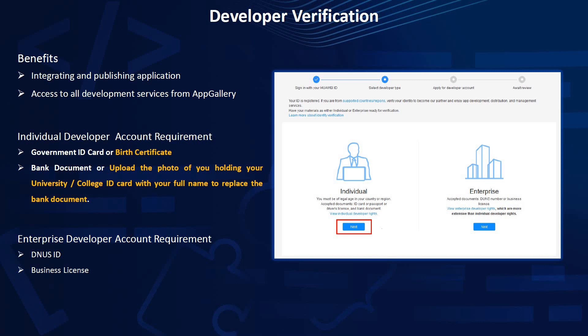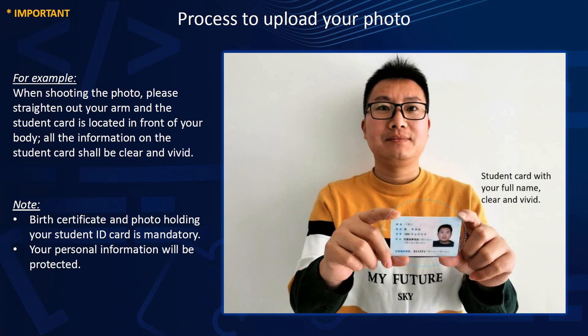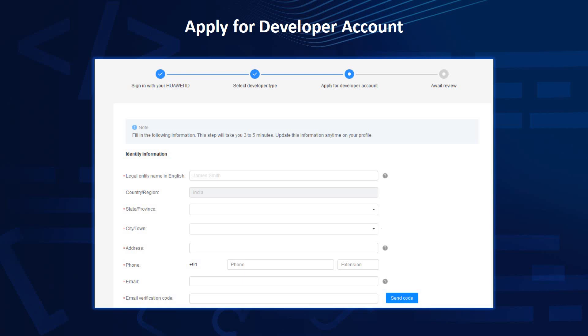If you do not have a bank document — for example if you are a student — you can take a photo of yourself clearly holding your college ID card, with your name vivid and visible. This can be accepted in place of the bank document. Your personal information is 100% protected. Once you have your documents ready, proceed to the verification page.